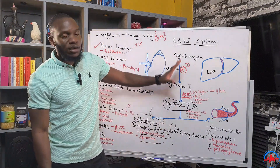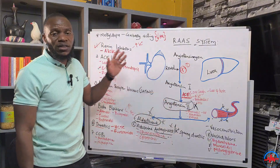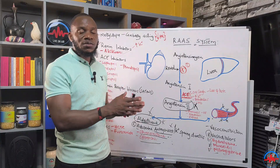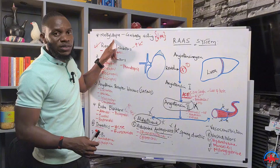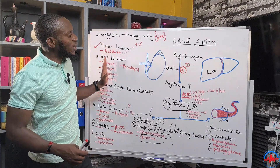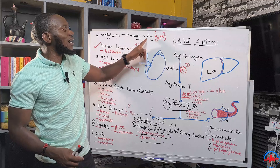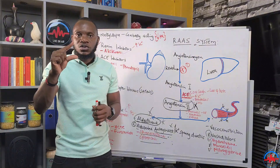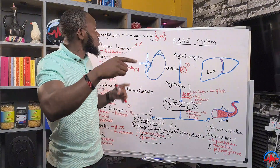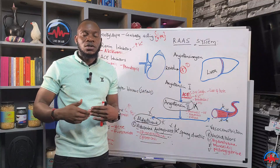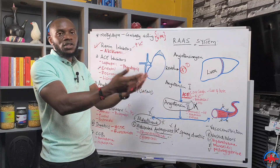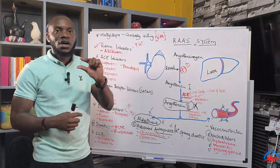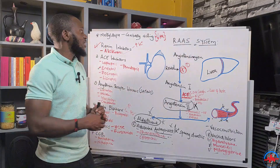There is one medication used in pregnant women called methyldopa — used in preeclampsia and blood pressure in pregnancy because it is safe in pregnancy. It does not act on the RAAS system. Instead, it acts centrally: it blocks the channels or signals in the brain that would cause vasoconstriction and an increased heart rate. When it blocks those central signals, the peripheral response is vasodilation and a reduced heart rate — this is how pregnant women survive hypertension in pregnancy.